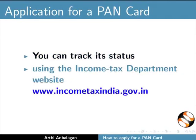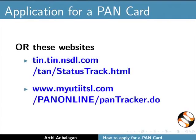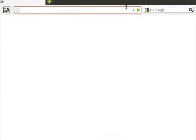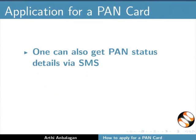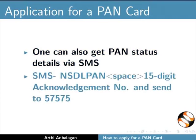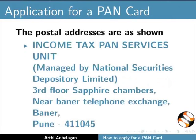You can track the status using the Income Tax Department website or other specified websites. On the website, the status track search will perform this task. This search will need either your acknowledgement number or details like name and date of birth. One can also get PAN status details via SMS by sending NSDLPAN followed by a space and the 15-digit acknowledgement number to 57575. The postal addresses are as shown.